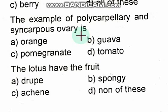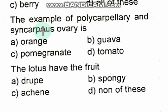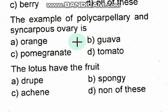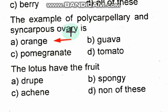The example of a polycarpellary and syncarpous ovary is orange. The options are orange, guava, pomegranate, and tomato — the right option is orange.